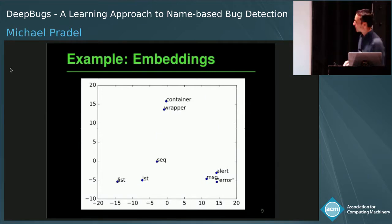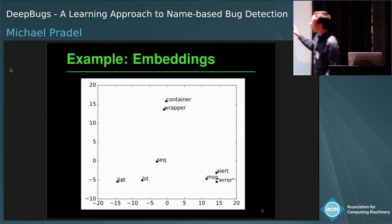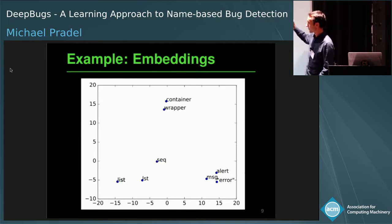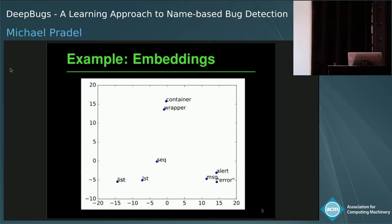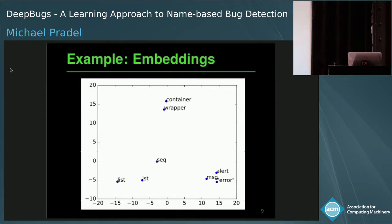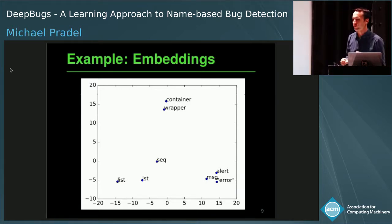What you get is a vector representation for every identifier — actually a 200-dimensional representation. Names that are semantically similar, like container and wrapper, are close to each other. Alert, message, and error are close to each other. List, LST, and seq — names typically used for sequential data structures — happen to be very close to each other.